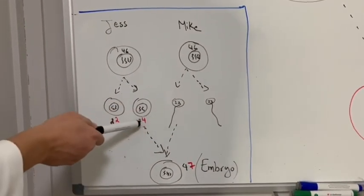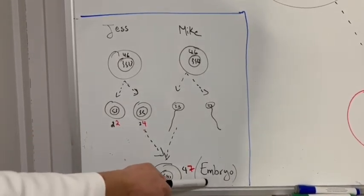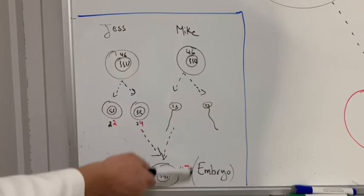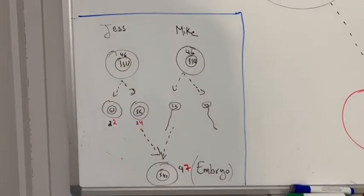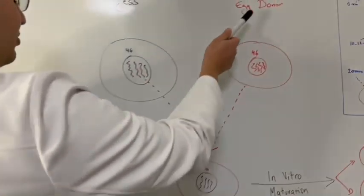So every time the sperm fertilizes this egg, they give us 47 chromosome embryo which is abnormal instead of 46 chromosomes. So now Jess is not ready to use donor egg, so she comes here and says to an egg donor...